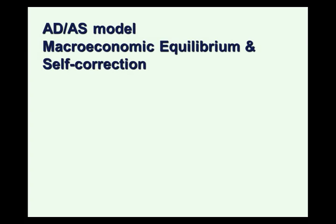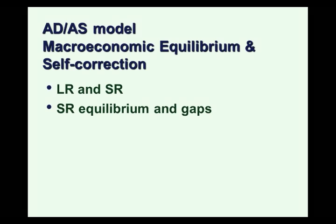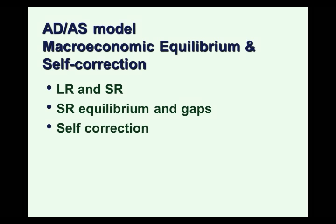In this short video, we're going to look at our aggregate demand and aggregate supply model and look at macroeconomic equilibrium. Specifically, we're going to distinguish between the long run and the short run for equilibrium. For short run equilibrium, we're going to look at what characterizes it, and then how the economy self-corrects to a long run equilibrium if there's a gap.